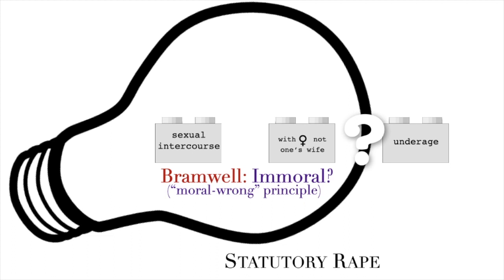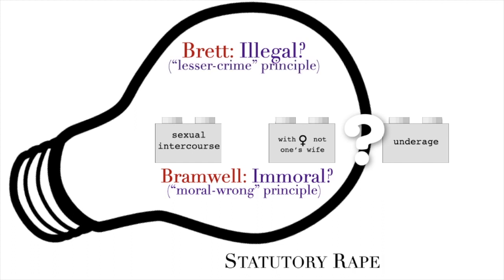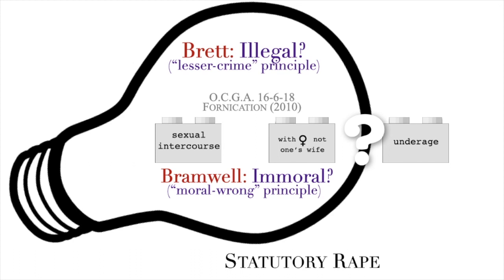Let's try the Brett approach — does it do any better? In the statutory rape case, the Brett approach asks: is what the defendant knew he was doing illegal? The casebook calls this the lesser crime principle. Applied here, it asks whether fornication — extramarital sex — is illegal. We might think 'of course not,' but we would be wrong. In eight states including Georgia, fornication is still a statutory offense. After the U.S. Supreme Court decision in Lawrence versus Texas, these are of doubtful constitutionality, but we are still left uncertain about the culpability required to convict someone of statutory rape.